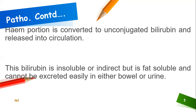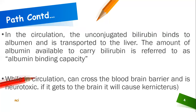This bilirubin, which is unconjugated, is considered to be insoluble and therefore fat-soluble, not water-soluble. It cannot be excreted easily either in faeces or urine. Whilst in the circulation, the unconjugated bilirubin will bind to albumin, which is considered to be a protein.